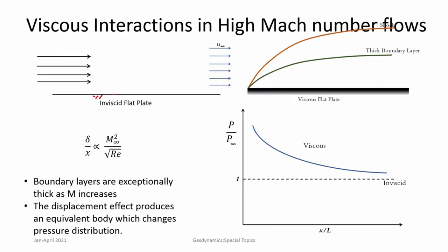Consider this picture of a flat plate. In an inviscid supersonic or high Mach number flow, the flow is not affected at all — it just flows over, everything is constant, pressure is also constant. But in real flows, you have viscosity, and the consequence of viscosity is that a boundary layer develops. The boundary layer thickness is relatively significant in high Mach numbers, and the boundary layer produces a velocity component which deflects the streamlines outward, causing the boundary layer to grow.